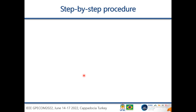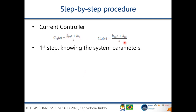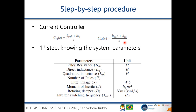Now for the step-by-step procedure, starting with the current controller. The current controller uses two PI controllers with different parameters for the Q axis and D axis. The first step is knowing the system parameters: stator resistance, direct inductance, quadrature inductance, number of poles, flux linkage, and so on — all the quantities you need beforehand to compute the remaining equations.